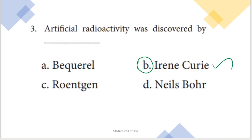Artificial radioactivity was discovered by Irene Curie and Joliot-Curie. So the answer is option B.